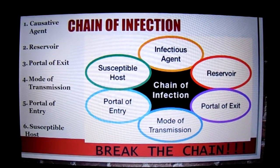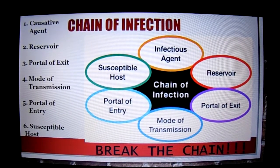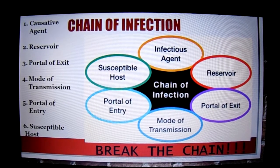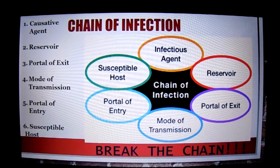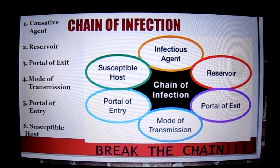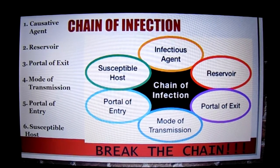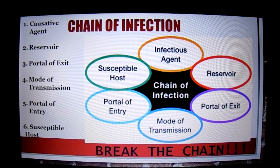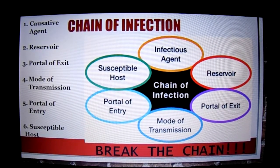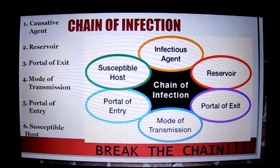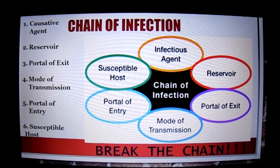The chain of infection consists of six links and can be broken at any one of the links. The causative or infectious agent is the virus, bacteria, or other harmful germ that causes a disease or infection. The reservoir or host is the place where the pathogen lives and grows. The portal of exit is any opening on an infected person that allows the harmful germ to leave, such as the nose, mouth, or a cut in the skin.